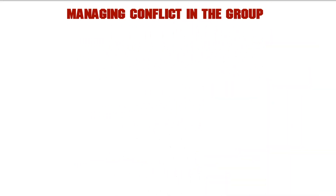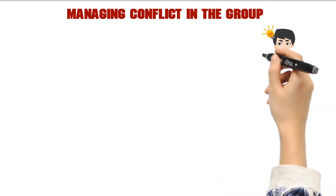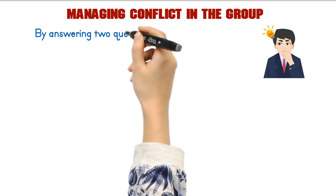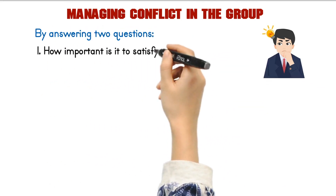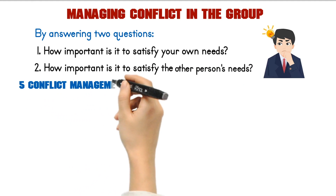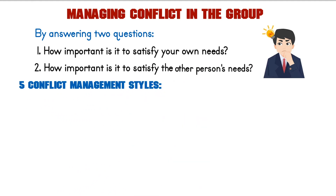Managing conflict in the group. One way to manage conflict is to understand the different approaches to conflict resolution. These approaches can be summarized by answering two questions: how important is it to satisfy your own needs, and how important is it to satisfy the other person's needs? There are five conflict management styles, each of which has a time and place in which they are appropriate. These styles include avoidance, accommodation, competition, collaboration, and compromise.